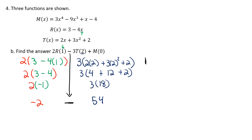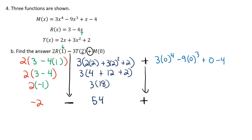Next thing I'm going to have is a plus sign, and then I have m where x is 0, so all the x's for m are going to be 0. 0 to the fourth power is 0, and 0 times 3 is 0. 0 to the third power is 0, and 0 times negative 9 is 0. Then we have 0, and then a minus 4. So 0 plus 0 plus 0 minus 4 is negative 4. So now we're just going to do the math: we have negative 2 subtract 54 plus negative 4, and that's going to give us the answer of negative 60.